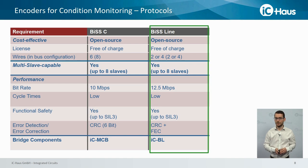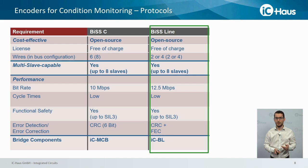BiSS line is the one cable technology of the BiSS interface. It allows power and data transmission over only two or four wires. Up to eight slaves can be connected to one BiSS master. It also offers high performance, is suitable for functional safety, and enables CRC protection. Furthermore, it allows correcting data that has been corrupted during transmission by forward error correction. The bridge component ICBL also enables integrating sensors with various interfaces.